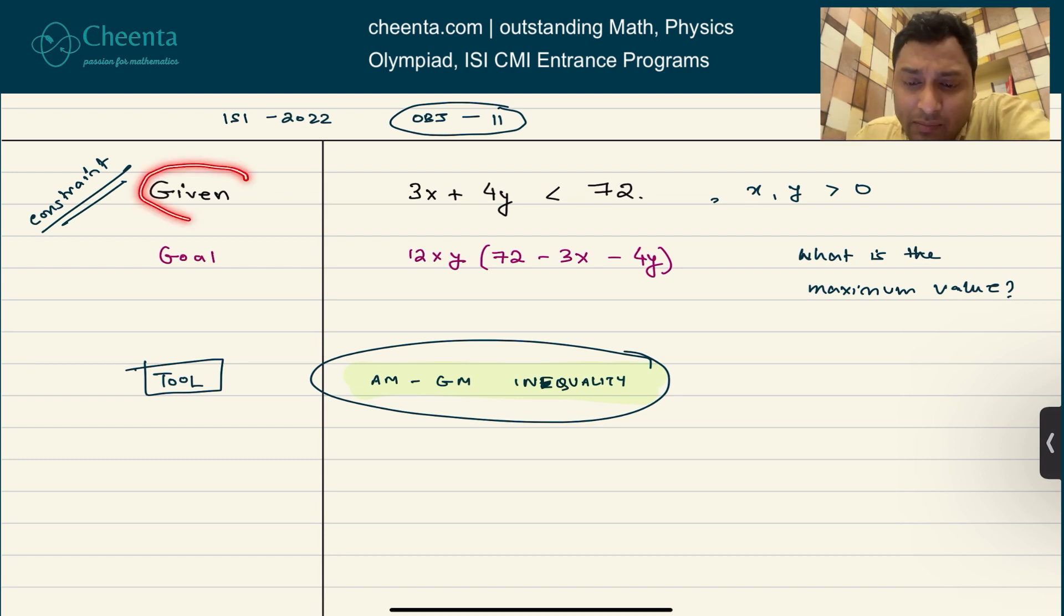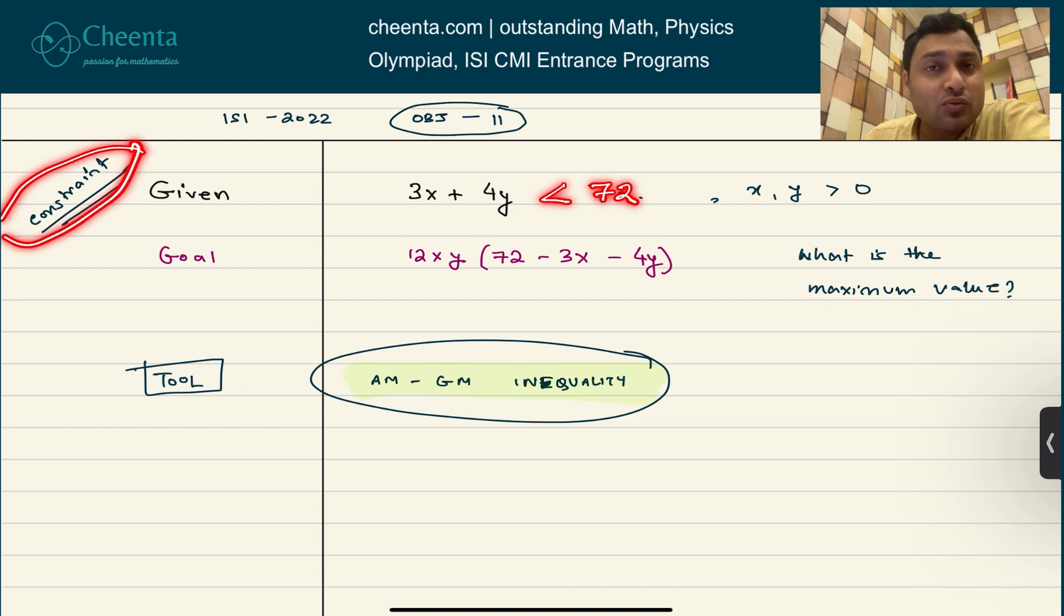The problem says that x and y are positive real numbers. 3x plus 4y is also given to be less than 72. This is sometimes known as a constraint equation. Constraint equations or inequalities are really exciting. There are advanced calculus techniques that can be used there but here we will just use pure algebra and we will be able to achieve the objective, the goal. And what is the goal?